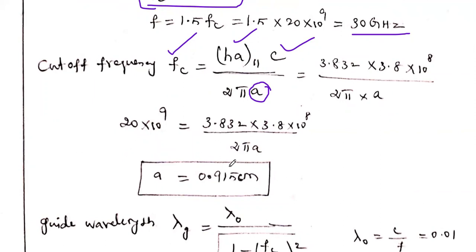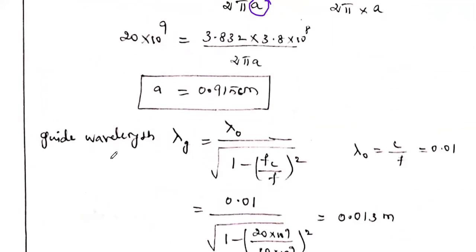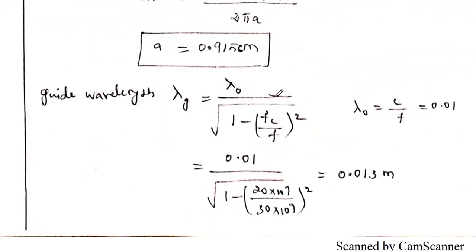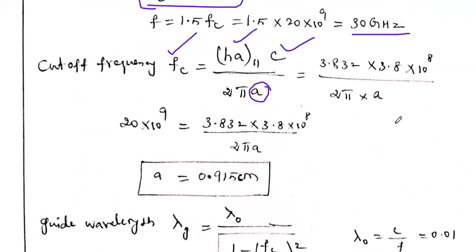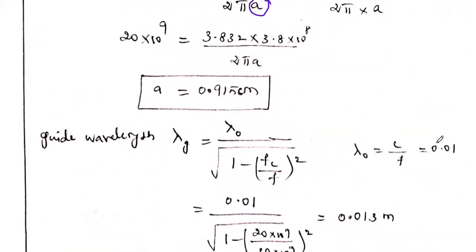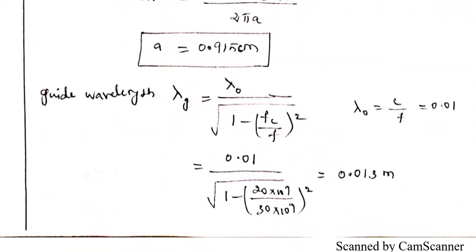Now find guide wavelength λg. λ₀ = C/f = (3×10^8) / (30×10^9) = 0.01 m. Then λg = λ₀ / √(1 − (Fc/f)²) = 0.01 / √(1 − (20/30)²) = 0.013 meters.